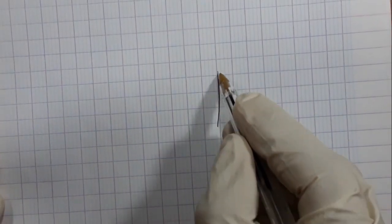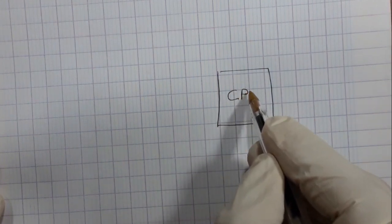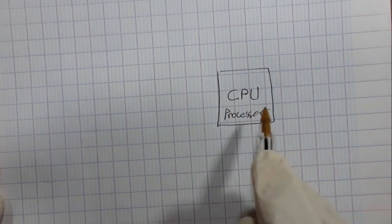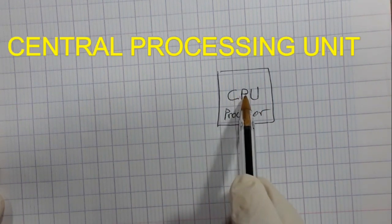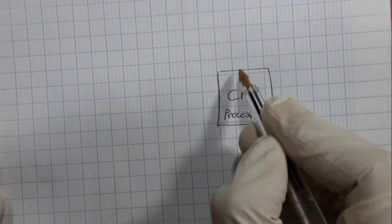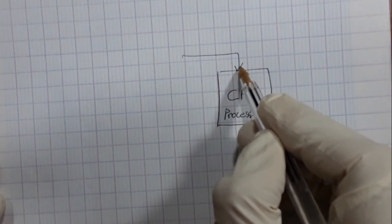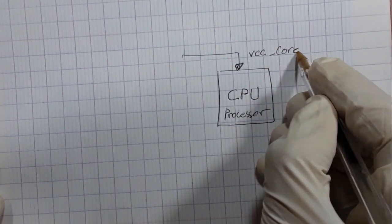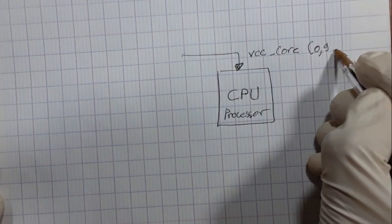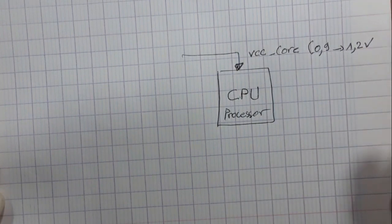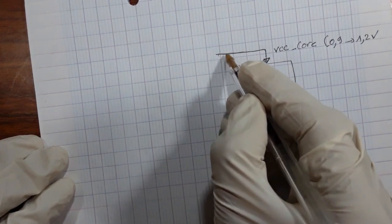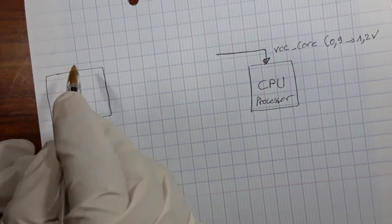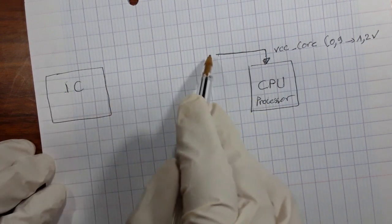This is the CPU, or processor. The CPU means central processing unit. This CPU needs power in order to be operated. The power is called VCC core, about 0.9 to 1.2 volts. The VCC core is coming from an IC — this is the IC or the CPU IC that generates this voltage.